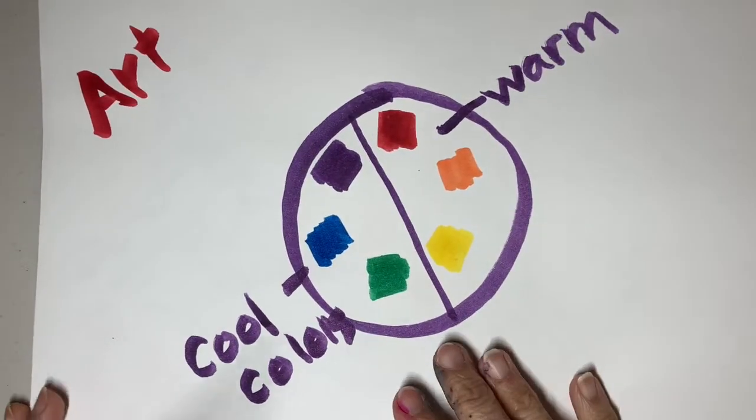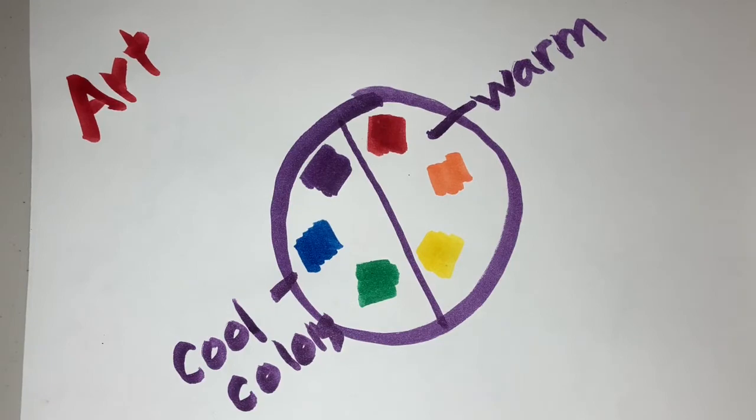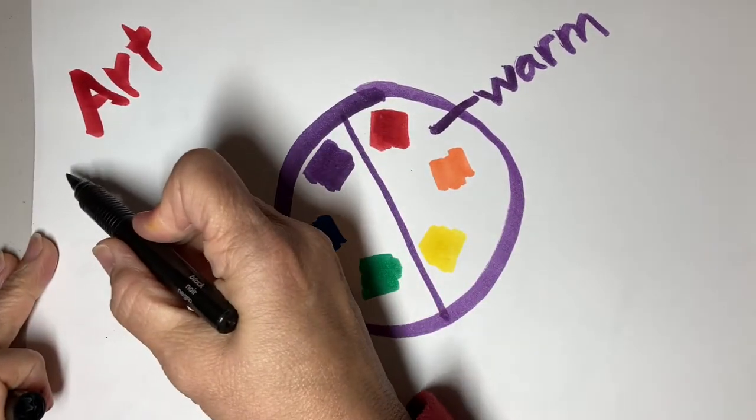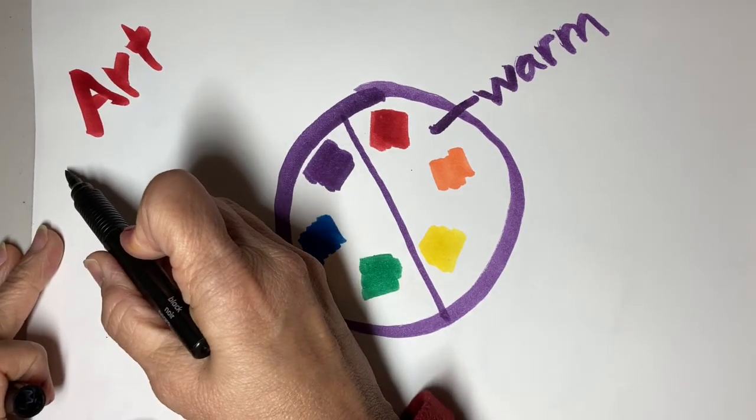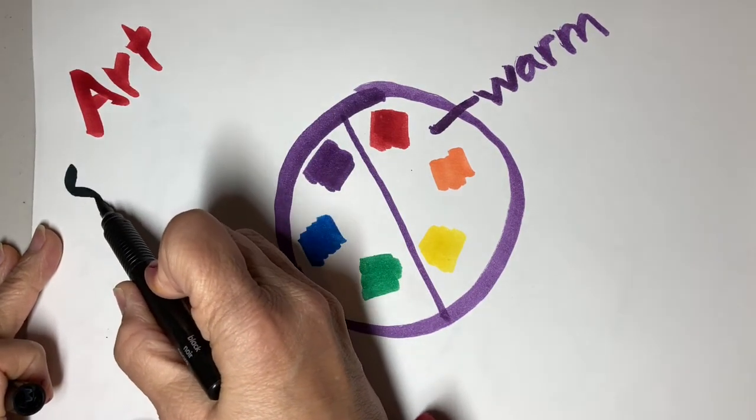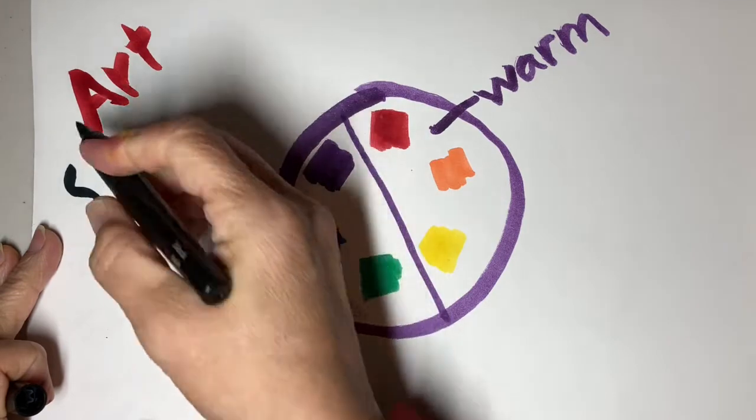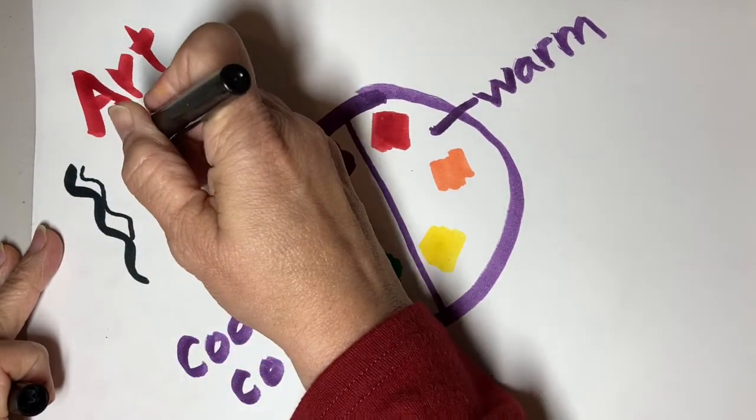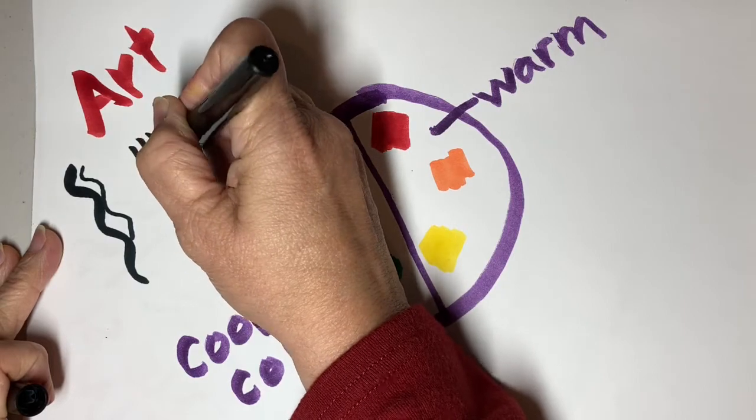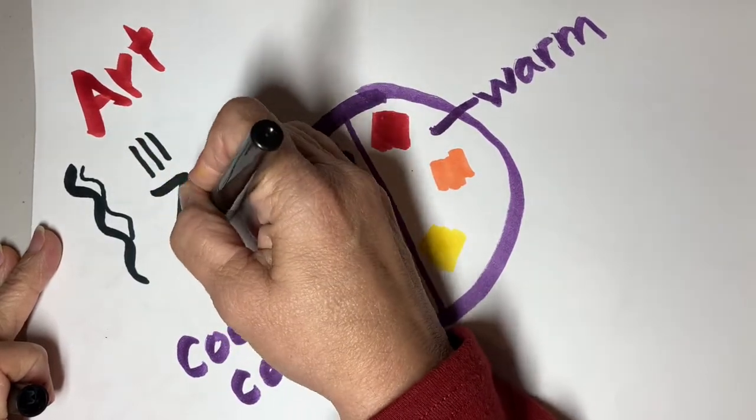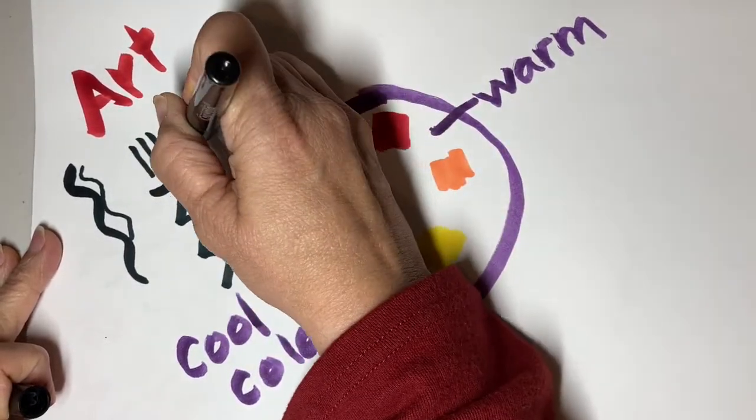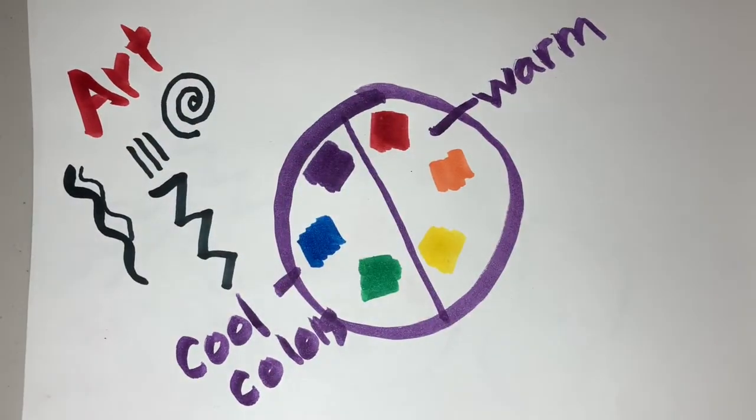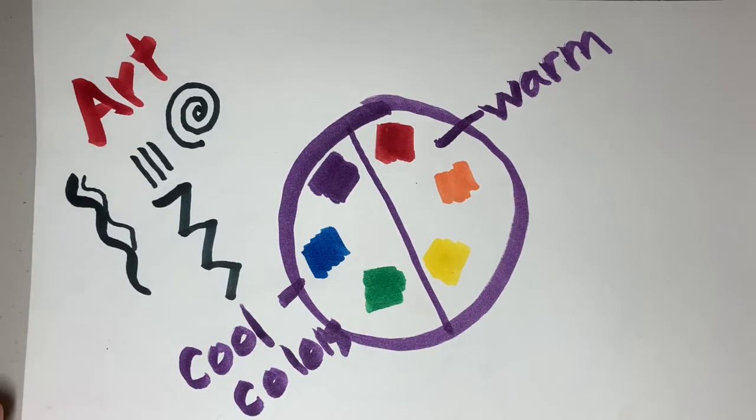The next thing we're going to talk about are lines. Lines are very interesting. They can add a lot of texture to your work. So there are thick lines and curvy lines, thin lines, straight lines, zigzag lines, lines that curve and spiral. You can use all of those lines to make your artwork more interesting.